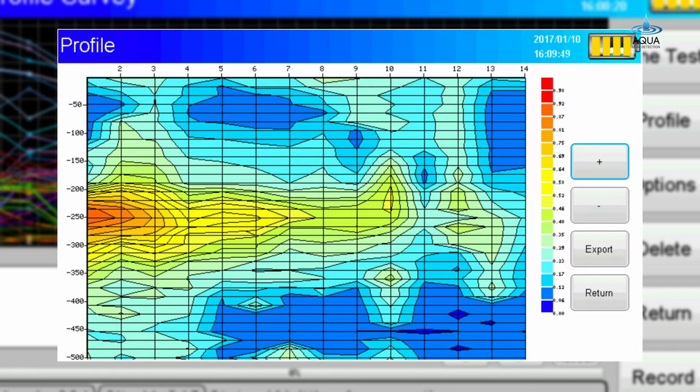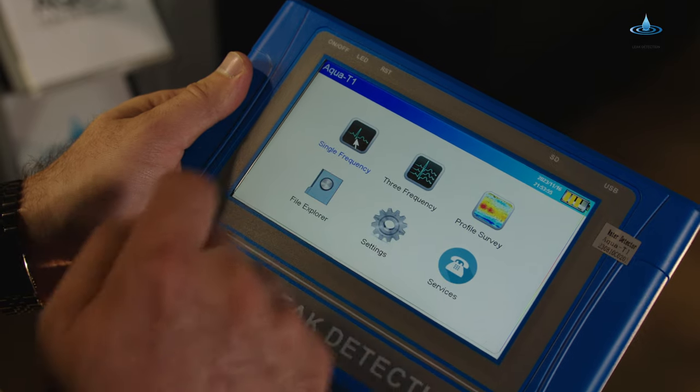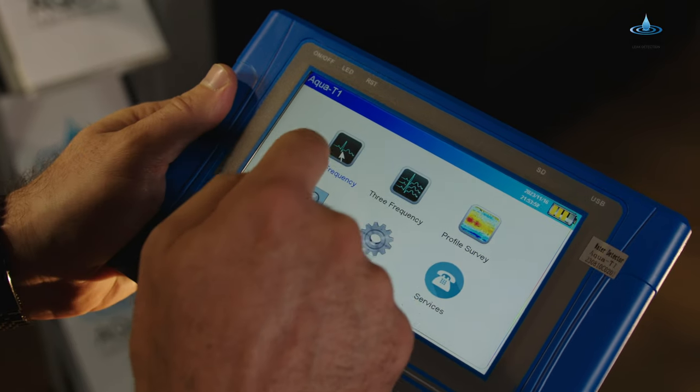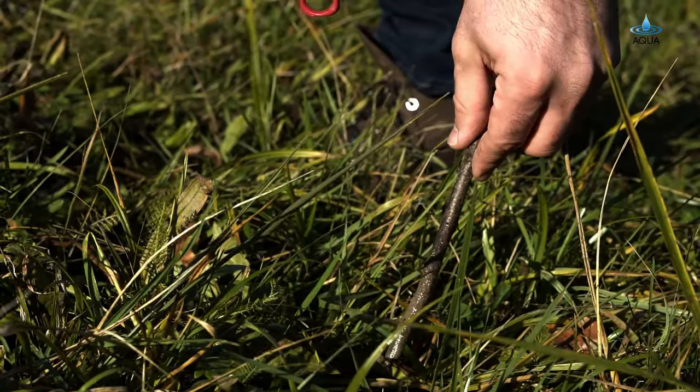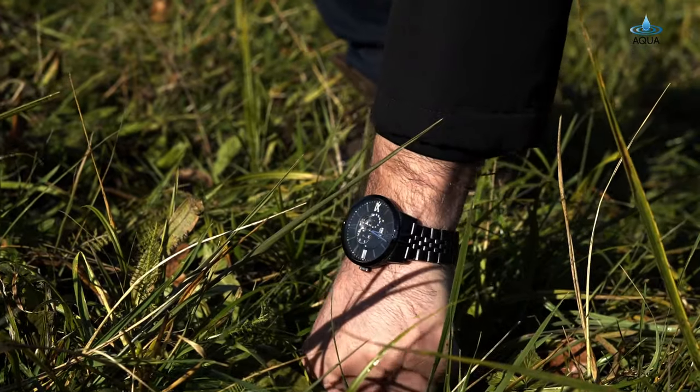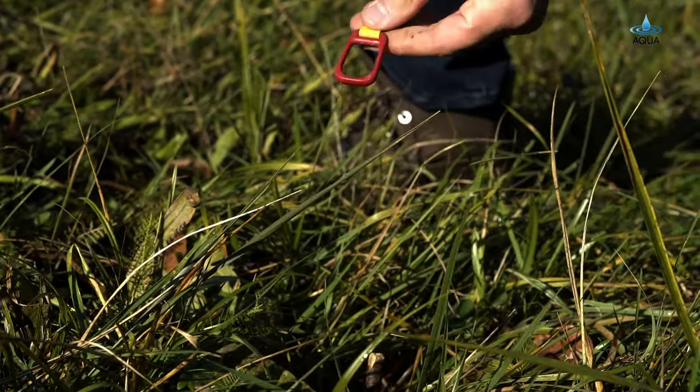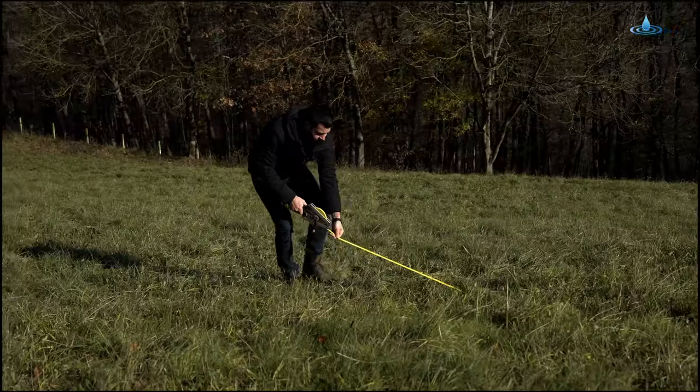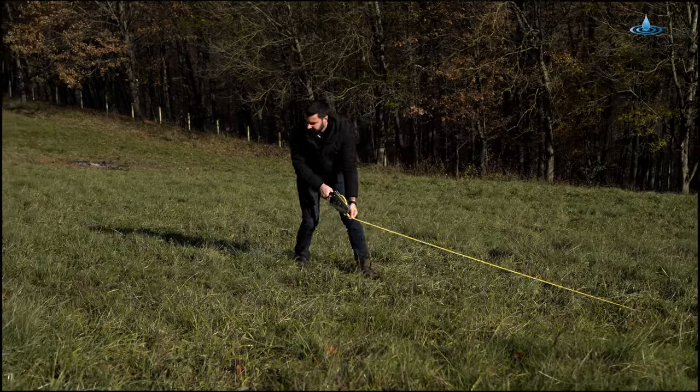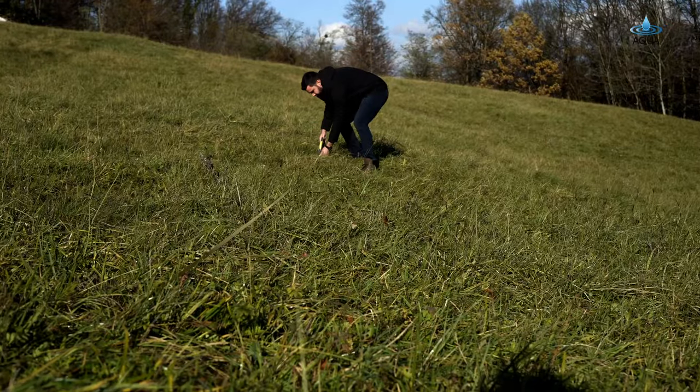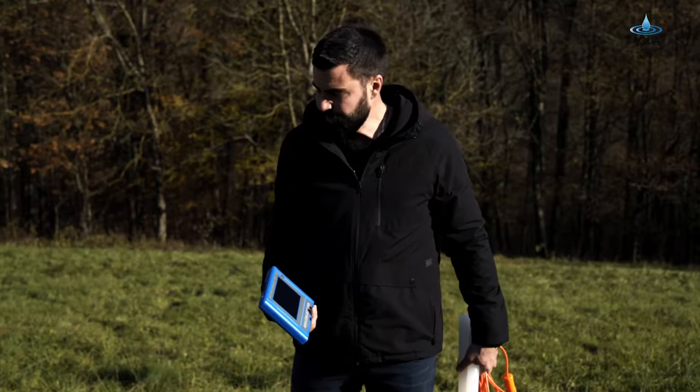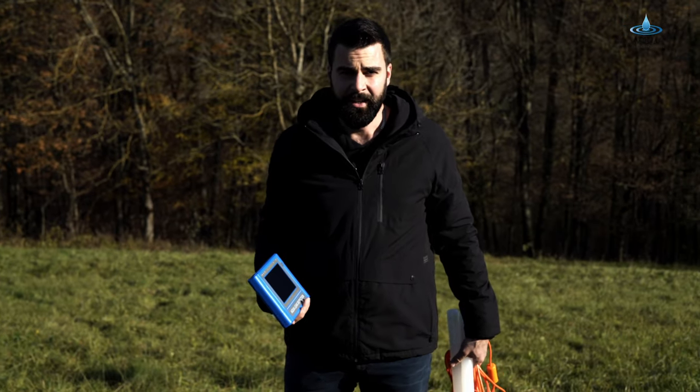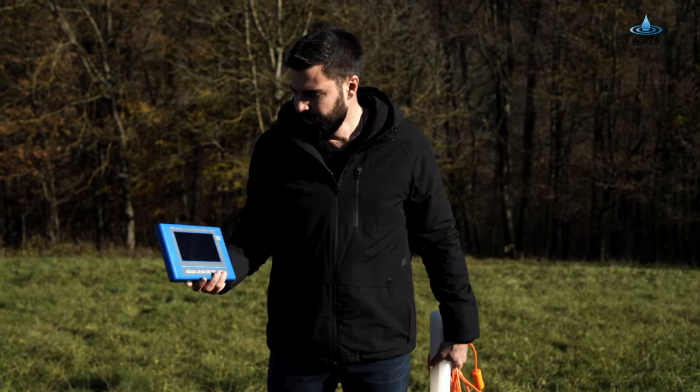When we go outside we'll use a single frequency to try and locate water. To start, you'll need a tape measure which you will put into the ground at the starting point. You fix it, you'll need to pull the tape measure out ten meters. Once you've got your tape measure lined out, you'll have your handheld device and your two rods with your cable.